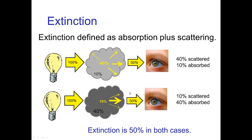It's also 50% extinction if only a small amount of the light is scattered but most passes through — on the other hand, if there's 40% absorption and 10% scattering, that is again 50% extinction. These two clouds would look equally dark, even though the processes going on within them are somewhat different.